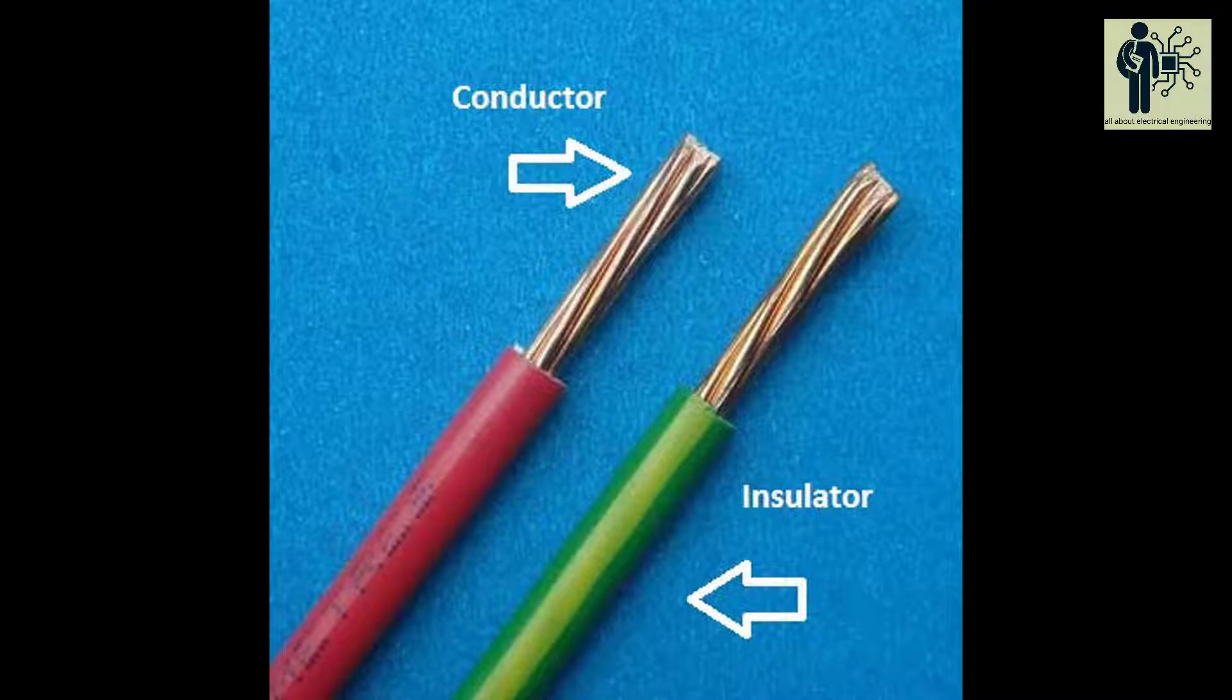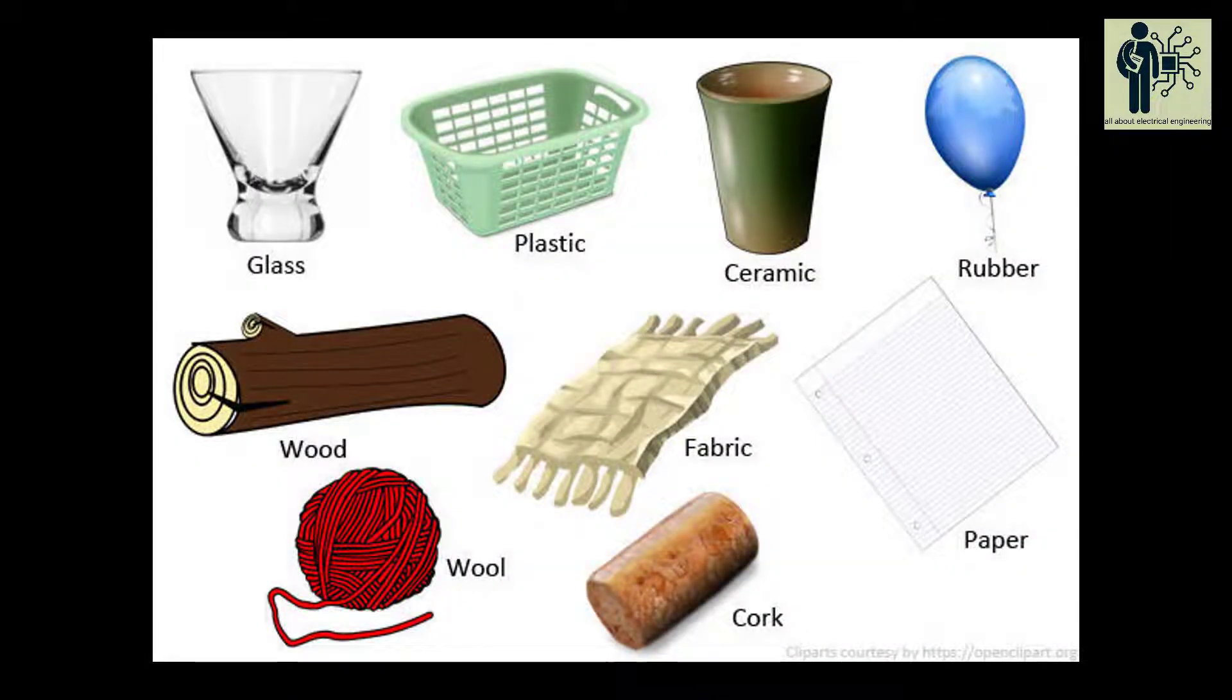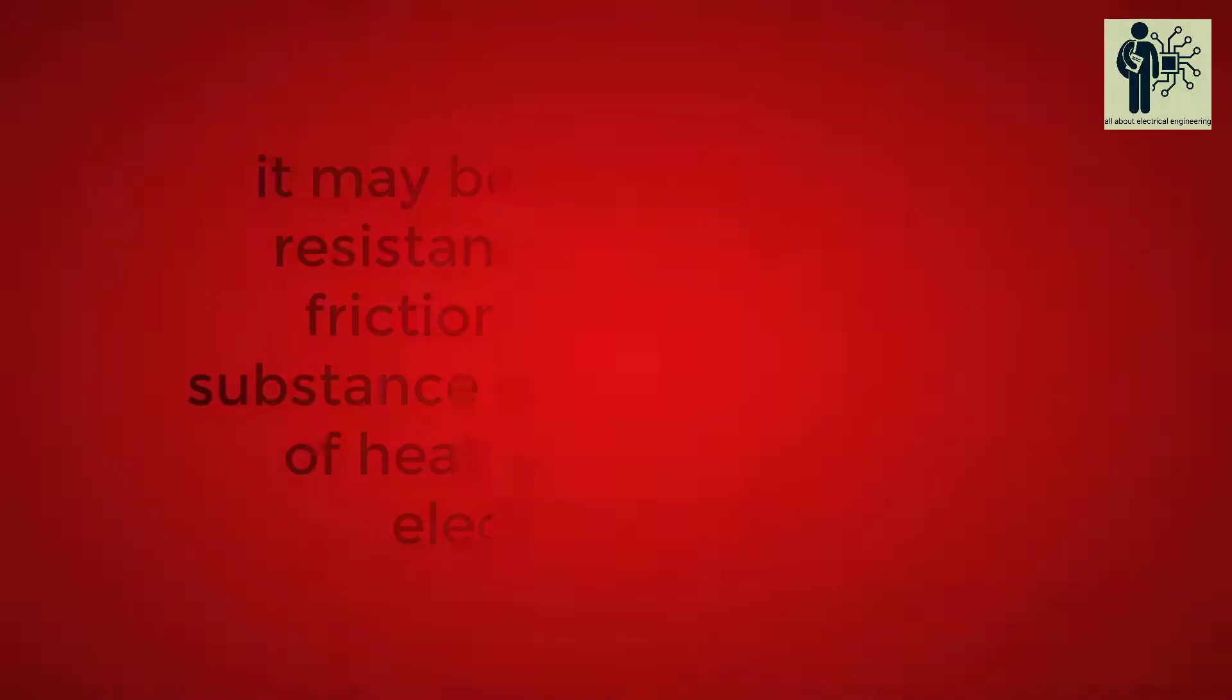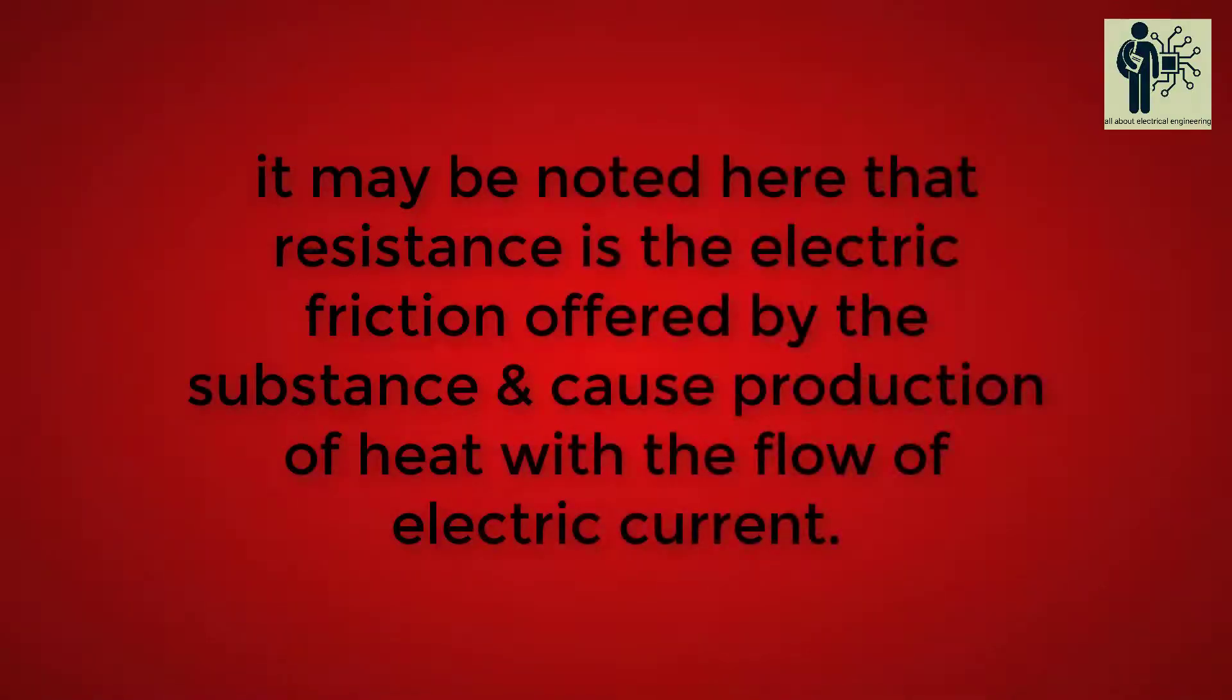On the other hand, those substances which offer very high opposition to the flow of electric current are called insulators, that is glass, rubber, mica, wood, etc.